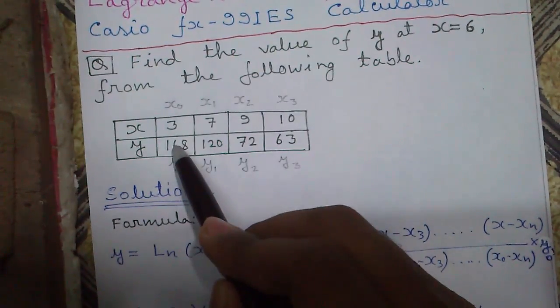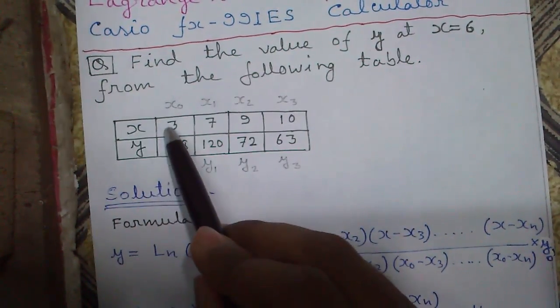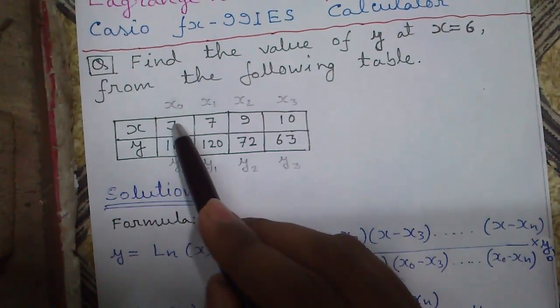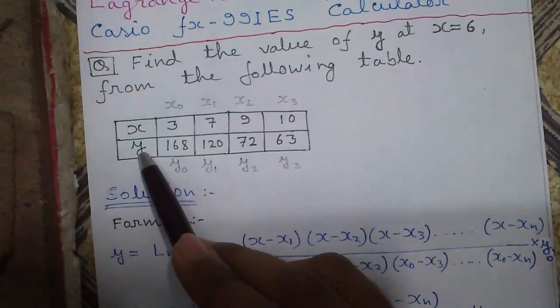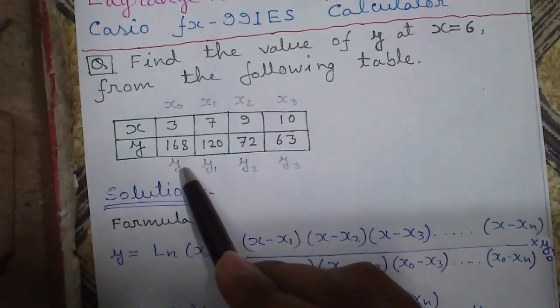For x equals 3, y is 168. Remember the first term of x in the x row is called x0, next term x1, x2 and so on. Similarly for y, the first term is y0, y1, y2, and so on.